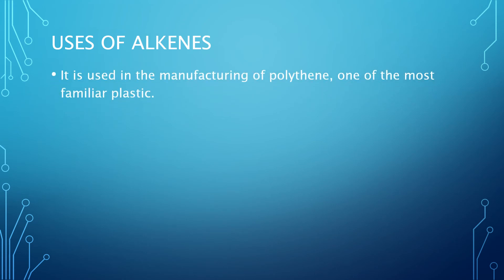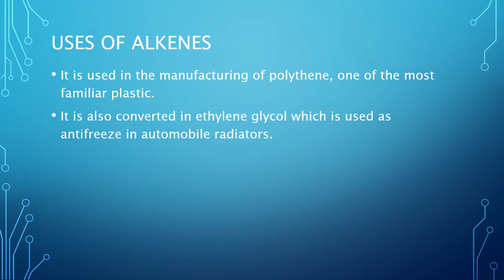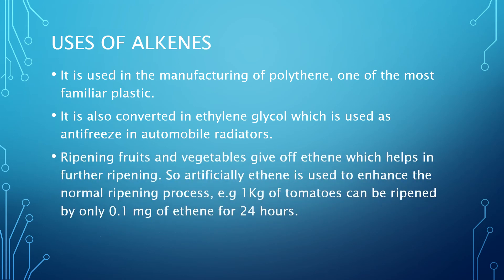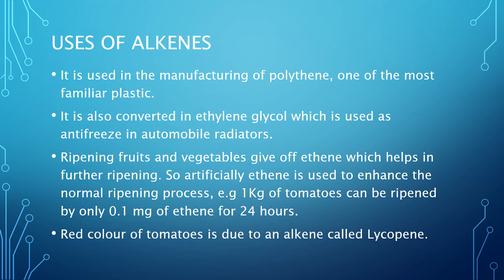Now the uses of alkenes. Alkenes are used in the manufacture of polythene, which is one of the most familiar plastics. Ethene is also converted to ethylene glycol, which is used as antifreeze in automobile radiators. Ethene is also used for fruit ripening — fruits and vegetables give off ethene during natural ripening, and adding artificial ethene enhances this process. For example, only 0.1 milligrams of ethene can ripen one kilogram of tomatoes within 24 hours. The red color of tomatoes is due to an alkene called lycopene.